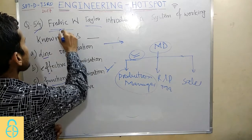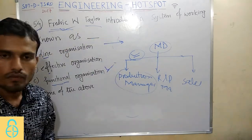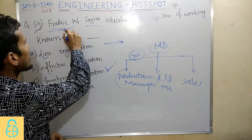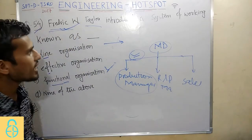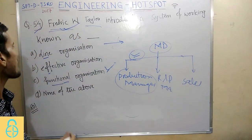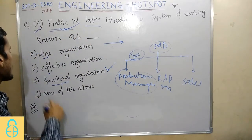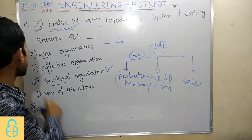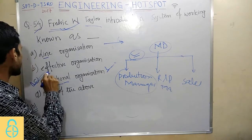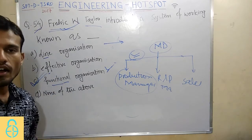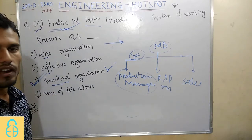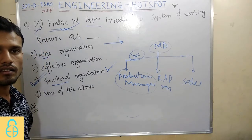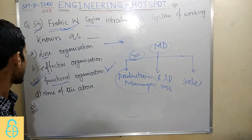The question asks who introduced the system of working, and the answer is F.W. Taylor, who introduced Functional Organization. So the correct answer is Functional Organization. If you have any queries regarding this question, you can ask in the comment section.